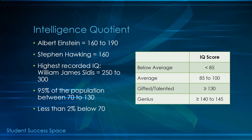Gifted and talented students in the educational system tend to need an IQ score of greater than 130, which equates to about two percent of the population. Less than two percent of the population is also below an IQ score of 70. However, 95 percent of the population falls between 70 and 130.